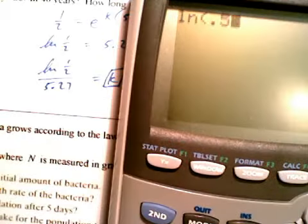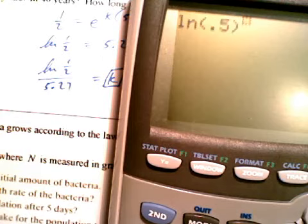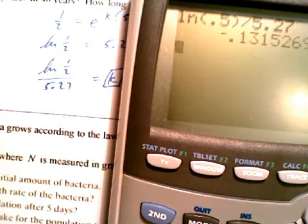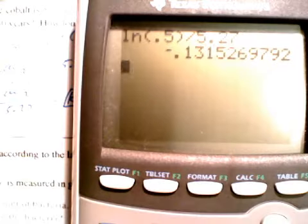ln of one-half, divide by, let's try it again. ln of one-half divided by 5.27, and we're going to store that value in alpha A. There's our value for K.